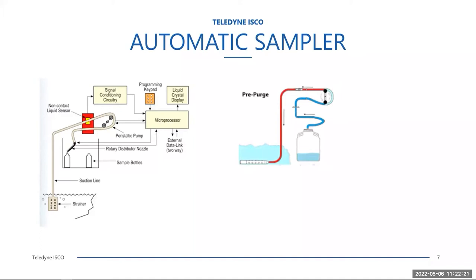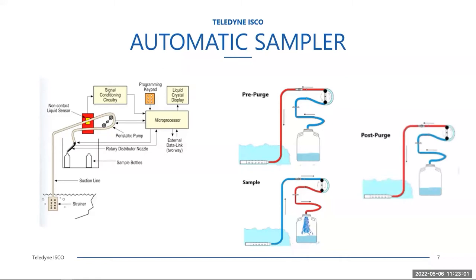The whole goal when that sample is collected is that the sample delivered to the bottle represents what's in the flow stream at the time it's collected. You do not want that sample to represent what's been sitting in the line for the last 15 or 30 minutes. Once it has purged the line, it will run forward and pull the sample up, delivering the programmed volume into that bottle. Once the sampler has delivered the programmed amount, it will run the pump in reverse again to purge and clear the line of all residual fluid, so the line is free and clear and able to deliver the next sample without any cross-contamination from previous samples.